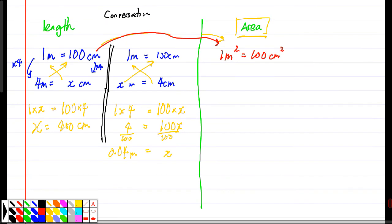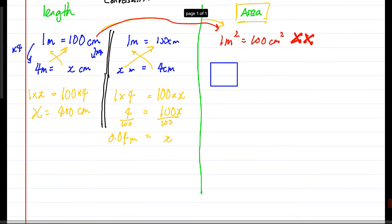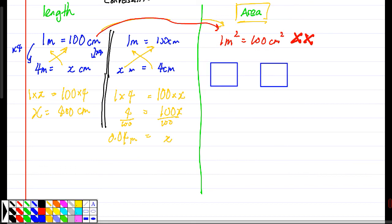So let me explain by drawing a picture. Now what does 1 meter by 1 meter squared mean? 1 meter squared means 1 meter times 1 meter, right? So 1 meter times 1 meter, which will give you 1 meter squared. This is the area.